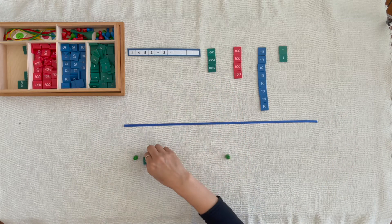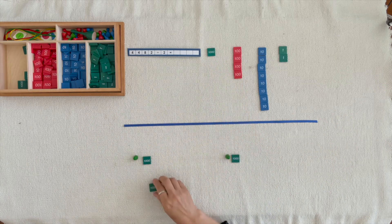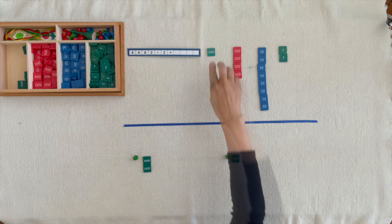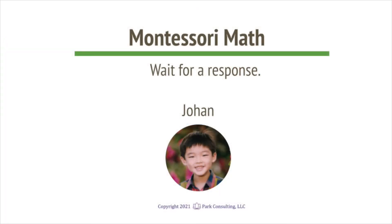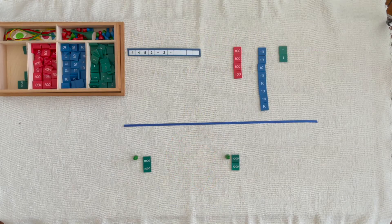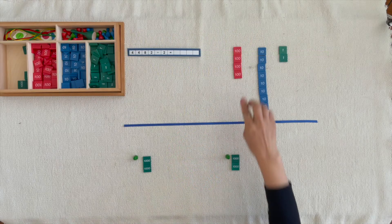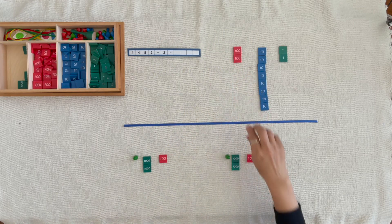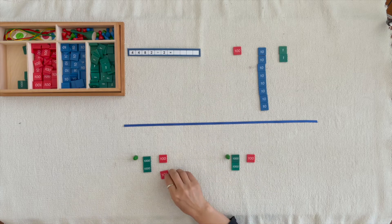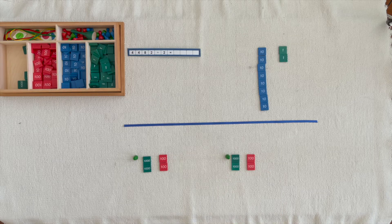One for you, one for you, one for you, one for you. How many thousands does each have? Does each Skittle have the same amount? One for you, one for you, one for you, one for you, one for you.